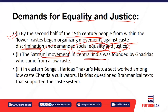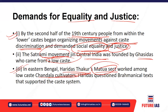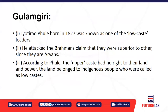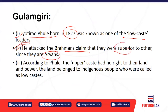The Satnami movement was started in Central India by Ghasidas, who belonged to a low caste, and impacted demands for equality for untouchables. In eastern Bengal, Harichand Thakur led the Matua sect, working among lower-caste Chandala cultivators. Harichand questioned the authenticity of Brahmanical texts that supported the caste system. The next reformer was Jyotiba Phule, born in 1827, a low-caste leader who attacked Brahmin claims of superiority based on their Aryan race identity.